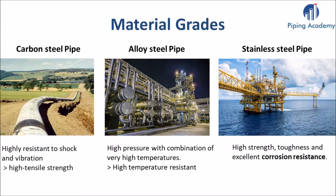Now if we look at alloy steel grades, we can say that they are perfect when there is an environment having a combination of very high pressure and high temperatures. While stainless steel is used for high strength, toughness and its excellent corrosion resistance. For much deeper knowledge on the many material grades we can find in this giant industry, I would recommend you to enroll in my online piping training course, which you can find on my Piping Academy website.